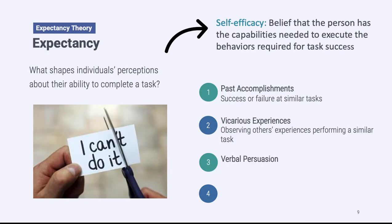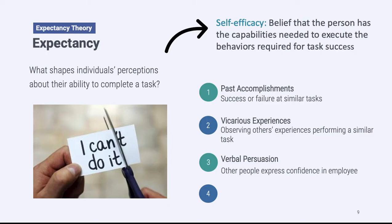The third component of self-efficacy is called verbal persuasion — basically, it's when other people tell you that you can do it. Let's say you have a written assignment and you're feeling unsure, and you email your instructor who says: 'You can absolutely do it. You are really smart, you're a great student, you can write this assignment, I believe in you.' Someone else showing confidence in you and expressing belief that you're able to do something can be very helpful in shaping self-efficacy beliefs. If other people think we can do it, we tend to also believe we can.